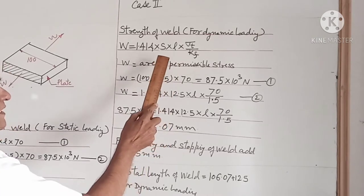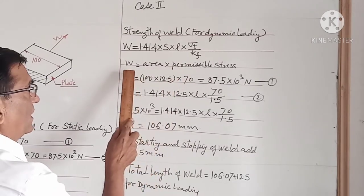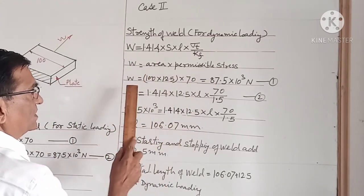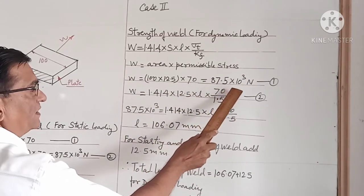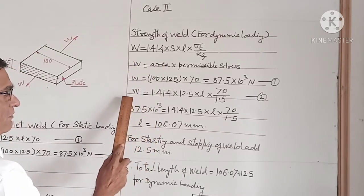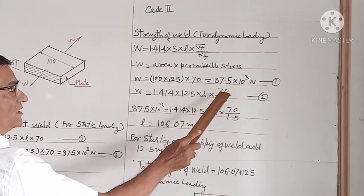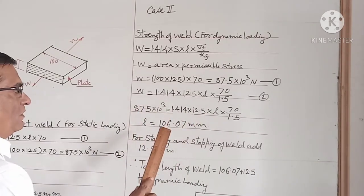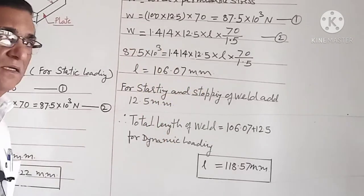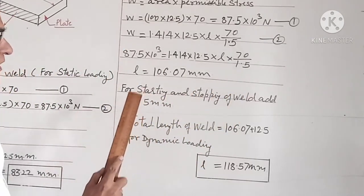For dynamic loading we consider the stress concentration factor Kf. The maximum load taken up by the plate is determined by area into permissible stresses, which comes out to be 87.5 into 10 raised to 3 N. Putting the value of W, the equation becomes W equal to 1.414 into 12.5 into L into 70 upon 1.5. From this equation the value of L comes out to be 106.07 mm. For starting and stopping of the weld we add 12.5 mm.